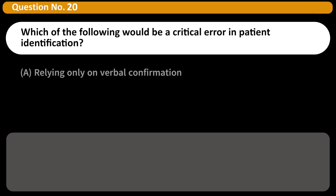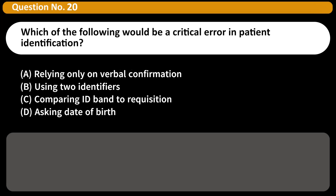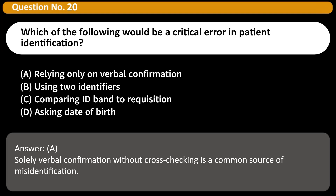Which of the following would be a critical error in patient identification? A. Relying only on verbal confirmation. B. Using two identifiers. C. Comparing ID band to requisition. D. Asking date of birth. Answer: A. Solely verbal confirmation without cross-checking is a common source of misidentification.